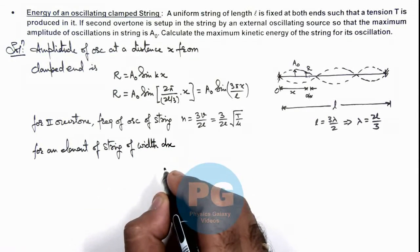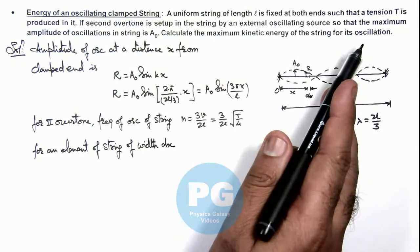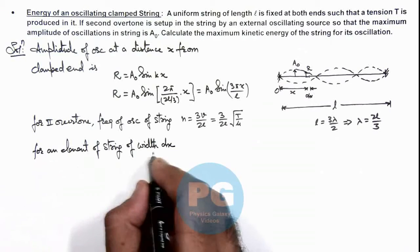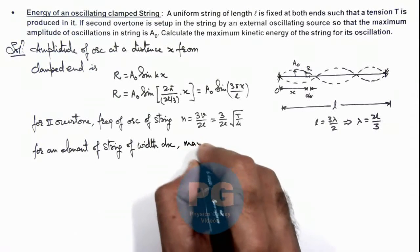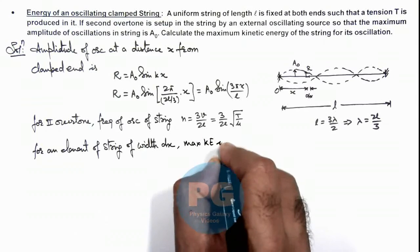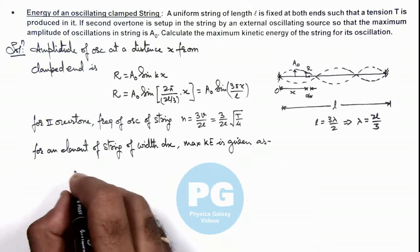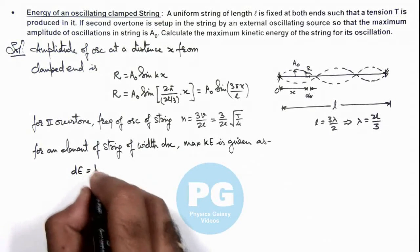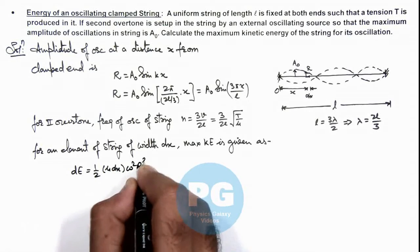of width dx, we are required to find a maximum kinetic energy of string for its oscillation. And for an element of string of width dx, maximum kinetic energy is given as this we can write as dE which is ½ its mass will be taken as μdx, ω²R².